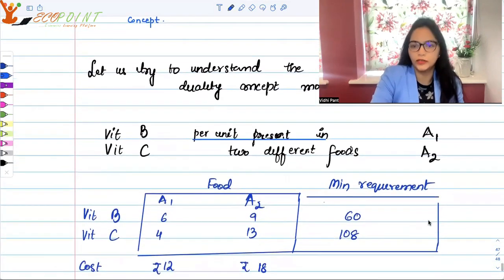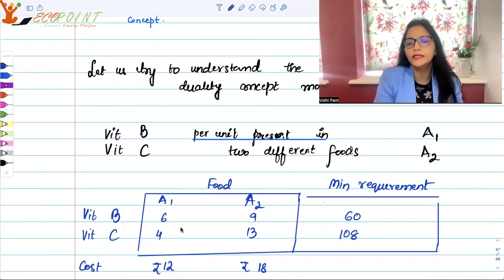Suppose we have the scenario that there are some minimum requirements of vitamin B and C in our body. Say 60 units of vitamin B are required and 108 units of vitamin C are required. Suppose we know that food item A1 will give me 6 units of vitamin B and 4 units of vitamin C, and food item A2 will give me 9 units of vitamin B and 13 units of vitamin C.